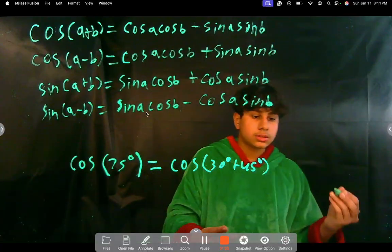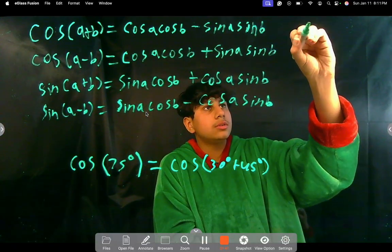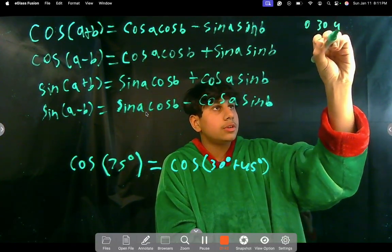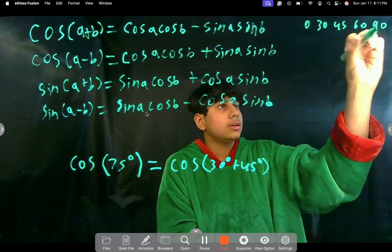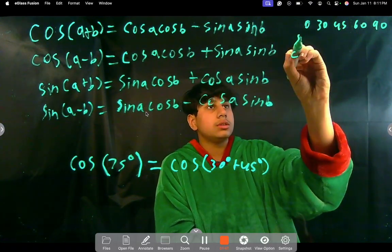So, now just to make it easier, right? Since this is our first time, we're going to use our table, alright? So, 0, 30, 45, 60, 90, sine, cosine. That's all we need so far.